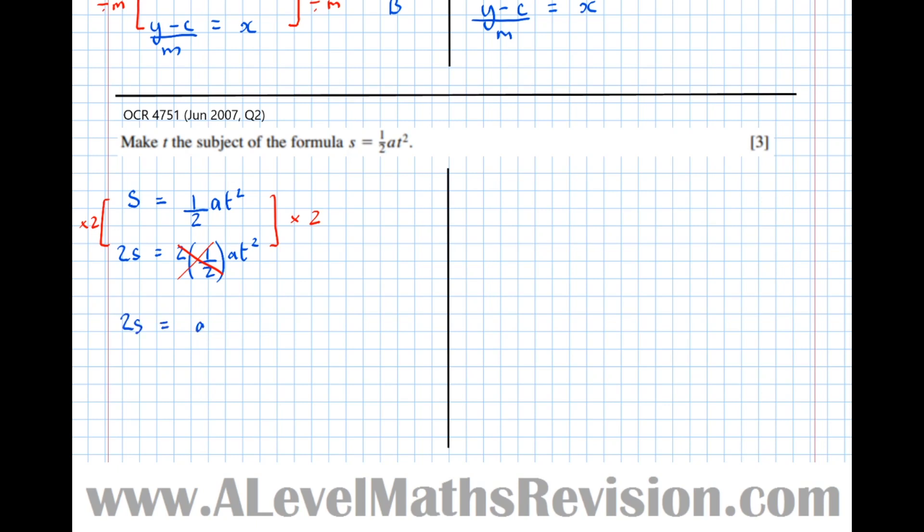2S equals AT². I can see attached to the T squared is an A, attached by multiplication. So to undo the times by A, I'm going to divide by A. Divide both sides by A, I get 2S over A equals T².